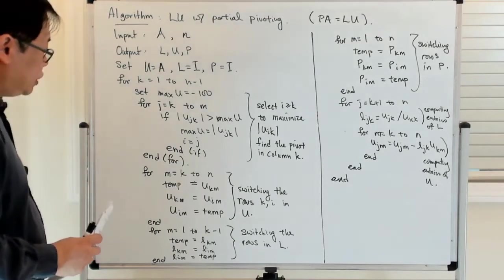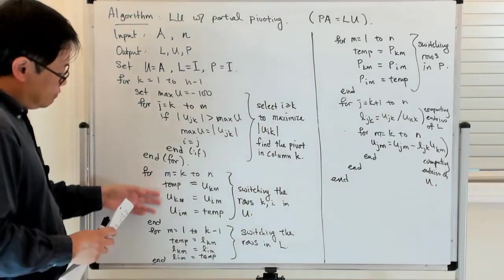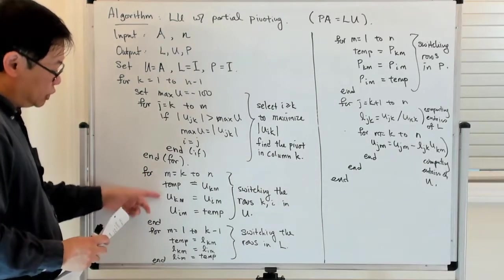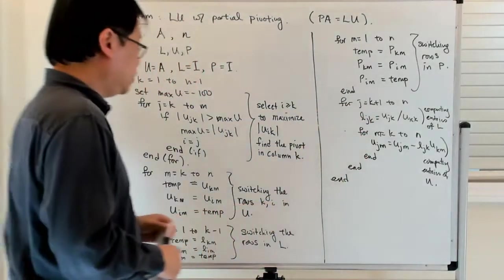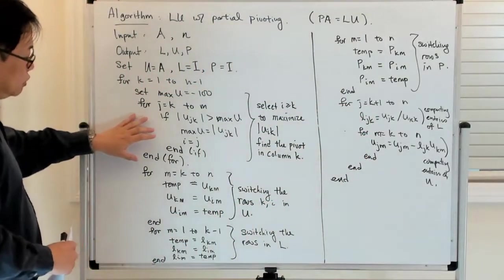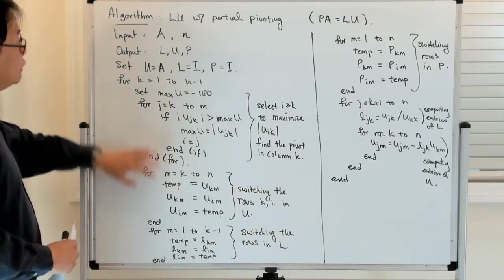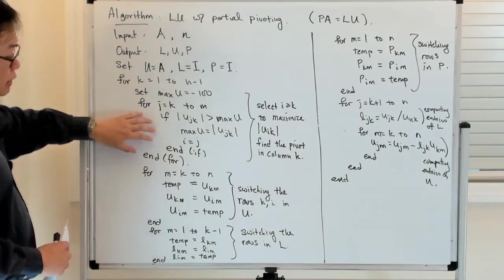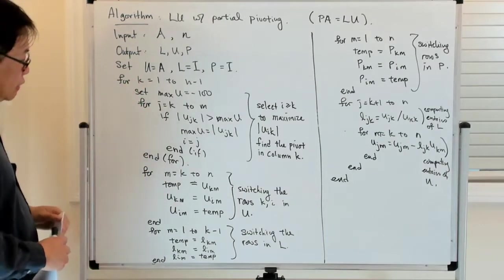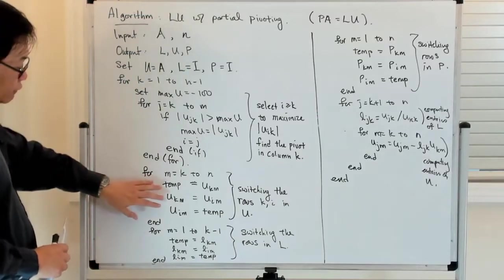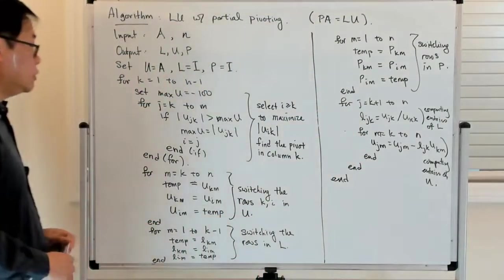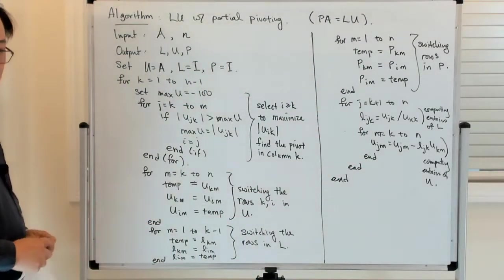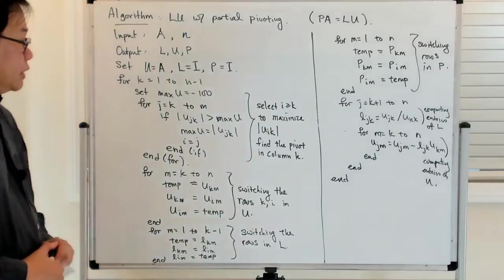If you're familiar with vectorization, then you will find that many of these operations can be done quite efficiently using some sort of vectorized notation. I'm not going to do that for the purposes of this pseudocode, but if you're familiar with vectorization, it's a relatively straightforward task to replace many of these for loops with a vectorized version of the code. So let me just stop here for now and we'll talk about this later.